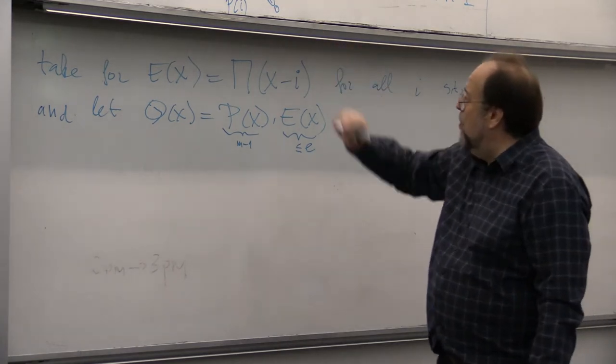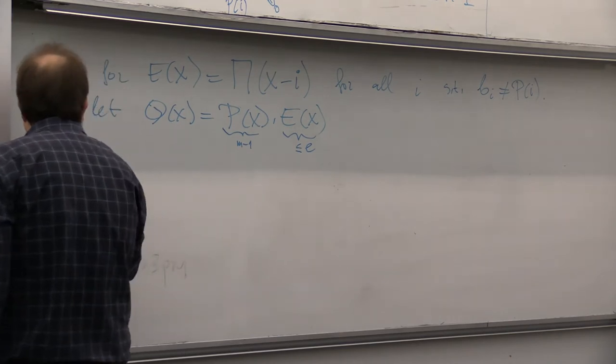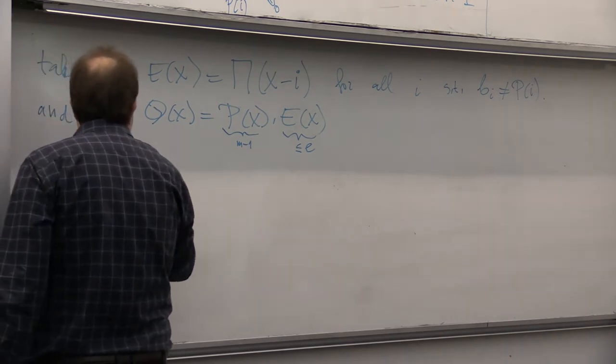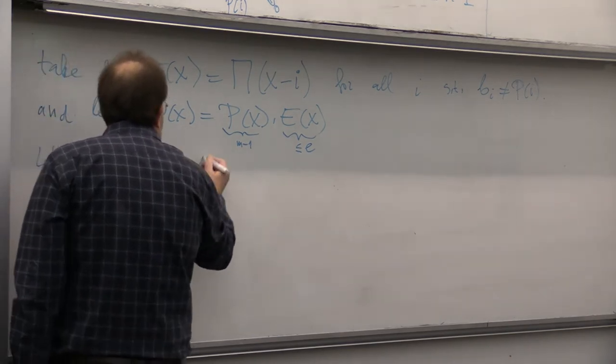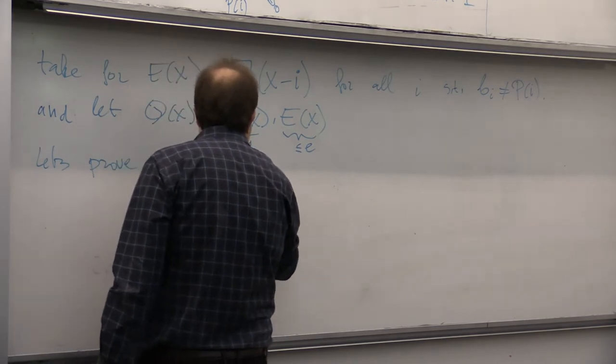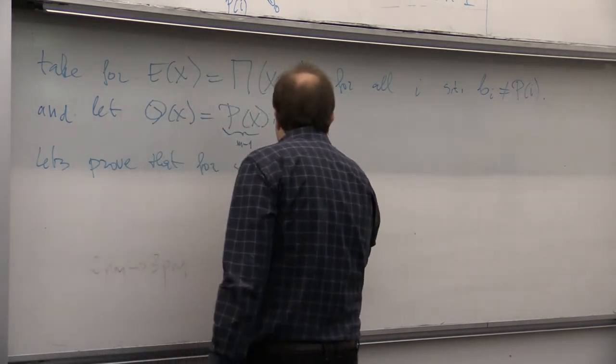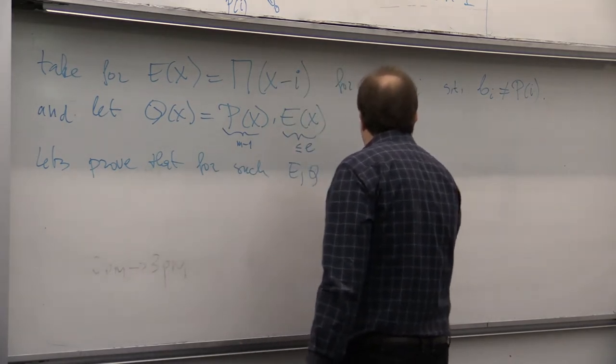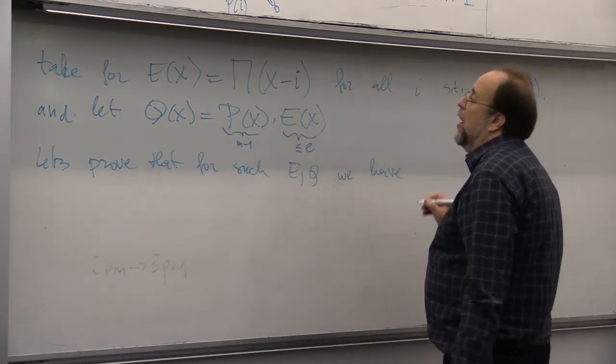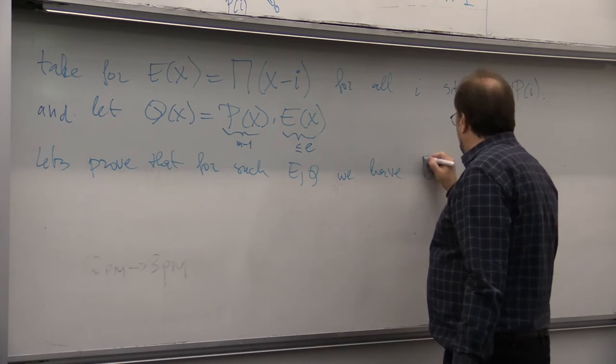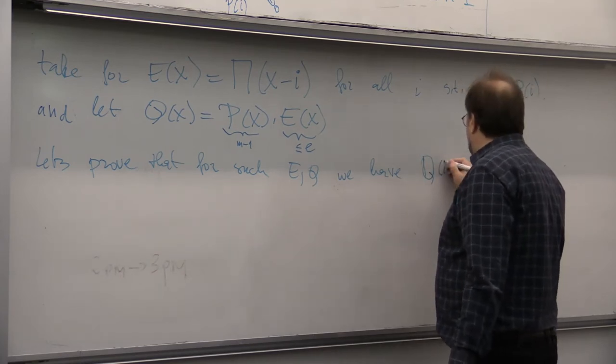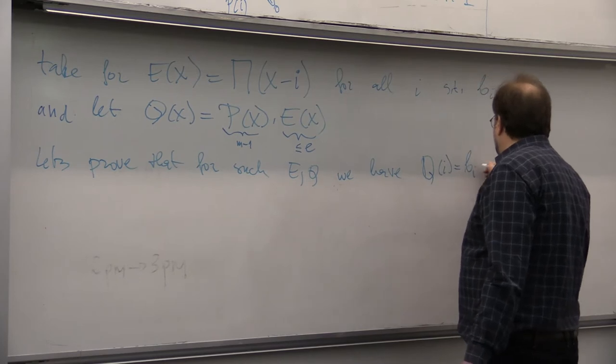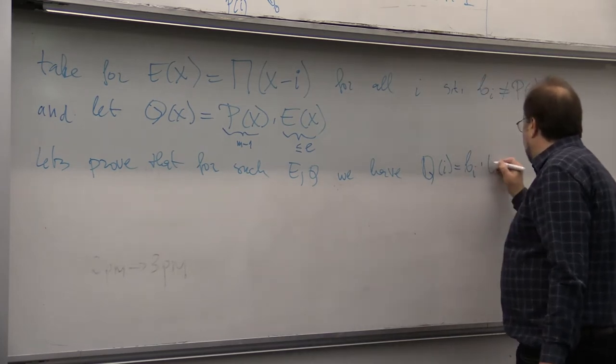Let us prove now. So, let's prove that for such E and Q, we have Q of I equals P I times E.